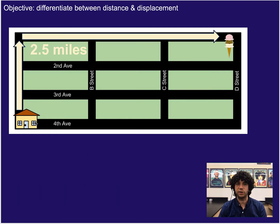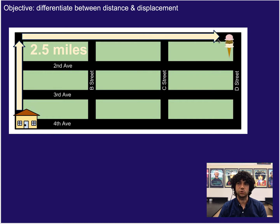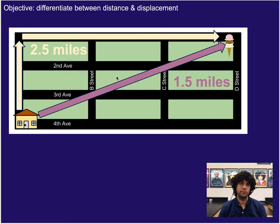So let's imagine a scenario where you start at home and you end up at an ice cream shop, and you went ahead and walked this way and then this way, and that was a total of 2.5 miles that you walked. Now if we looked at just how far it is from your house to the ice cream shop directly, that length is 1.5 miles.